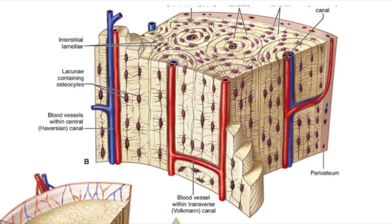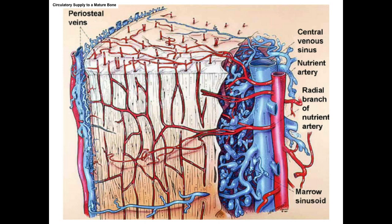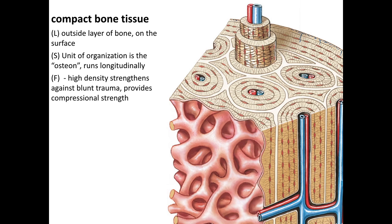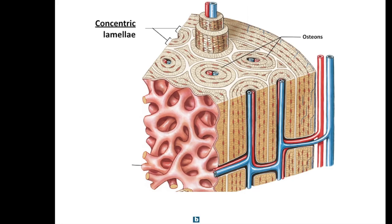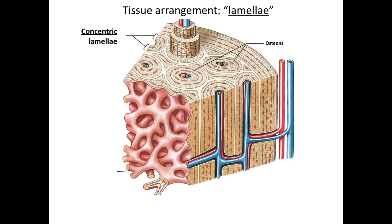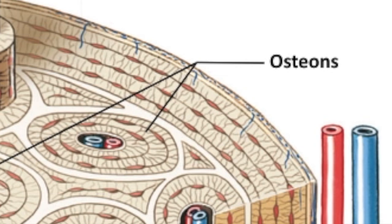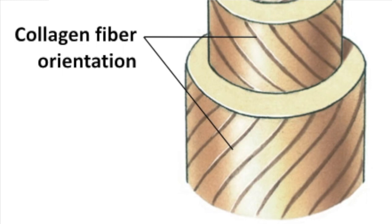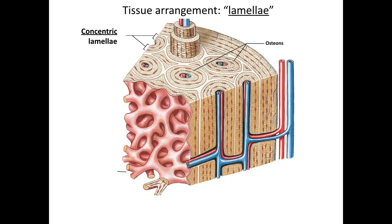Although compact bone looks solid, we're going to see several structures under microscopic examination. Bone is extensively vascularized, reflecting its dynamic nature. Blood vessels run longitudinally through spaces called central canals and then perpendicularly through perforating canals. The functional unit of compact bone is the osteon — long cylindrical structures oriented parallel to the long axis of the bone and the main compressional stressors. Structurally, an osteon is a group of concentric tubes resembling the rings of a tree trunk in cross-section. Each of these tubes is called a lamella — a layer of bone matrix — and osteocytes sit in their lacunae within each ring, with canaliculi running perpendicular to them. Within each lamella, the collagen fibers and mineral crystals align and run in a single direction.